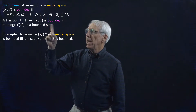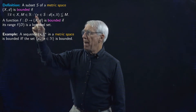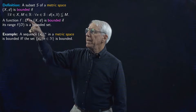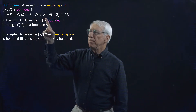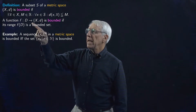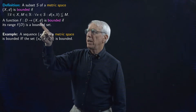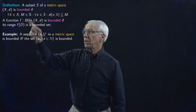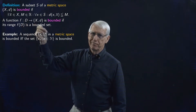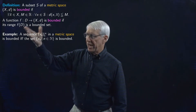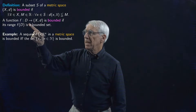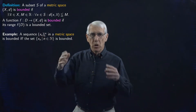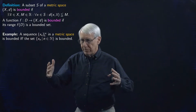We could say a set in a metric space is bounded if there is some point in the space that we'll call x-bar, and for that x-bar, every element of the set S is no farther from x-bar than some number M. So there's some element x-bar in the space — actually in capital X, the space, although putting it in the set S would also work — and there's some number M such that every point in the set S is no farther than M from x-bar, so things don't get farther and farther apart. That's what we mean by being bounded.